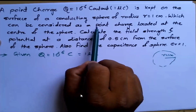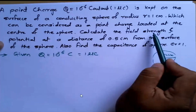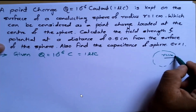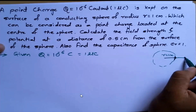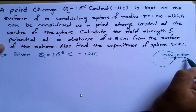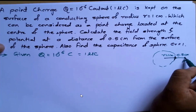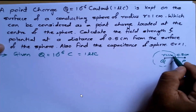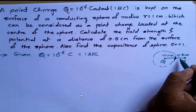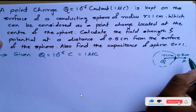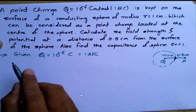This charge can be considered as a point charge located at the center of the sphere. We need to calculate the field strength and potential at a point P which is at a distance of 0.5 cm from the surface of the sphere.